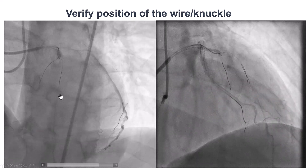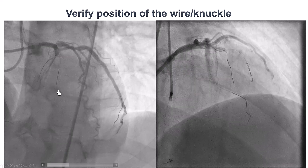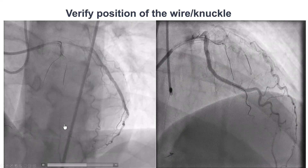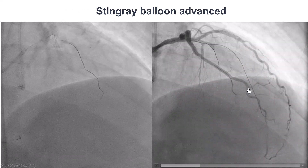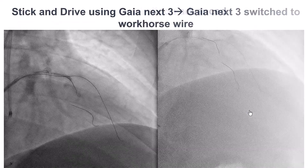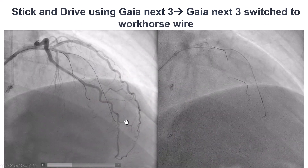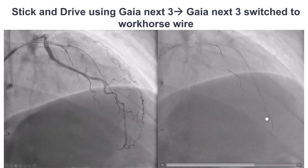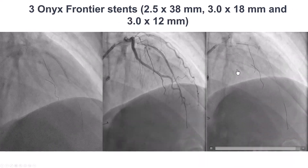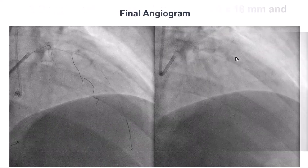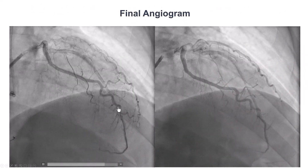This was verified by contralateral injection. In contrast to the previous injection, we now have dancing of the antegrade guide wire along with the vessel. We then advanced a Stingray balloon to the area of re-entry and performed the stick-and-drive technique using a Gaia Next 3, which advanced into the distal true lumen. This was exchanged for a workhorse wire, the vessel was pre-dilated, and three drug-eluting stents were placed, providing a nice result with TIMI-3 flow down the LAD.